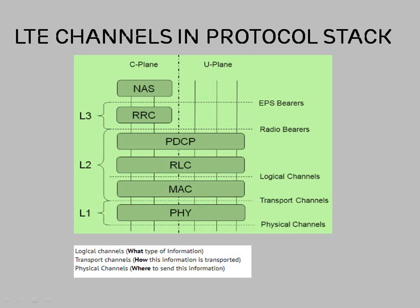In this diagram we have three channels: logical channel, transport channel, and physical channel. Logical channel is present between RLC and MAC, transport channel is present between MAC and physical, and physical channel is present between physical layer and the baseband. This is how these three channels are represented in the UE protocol stack and will help in the flow of information.